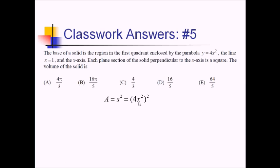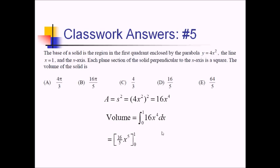Normally I wouldn't bother simplifying, but I actually have to integrate this by hand — it's a no-calculator question. Our volume is the integral from 0 to 1 (this parabola intersects the x-axis at the origin, and we go to the vertical line at x equals 1) of 16x to the fourth dx. Taking the antiderivative bumps the exponent to 5, giving 16 over 5 times x to the fifth, evaluated from 0 to 1. That's 16 over 5 times (1 to the fifth minus 0 to the fifth), which is just 16 over 5 — answer choice D.